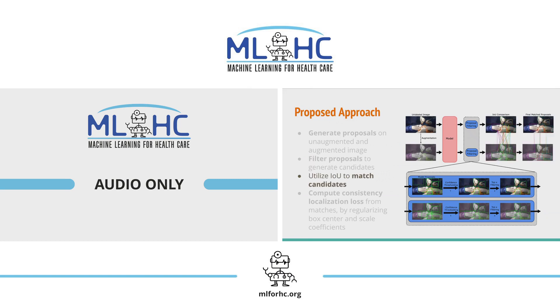Next, we use the intersection over union metric to match candidates between the two versions of the image. And lastly, we compute a consistency localization loss from the matches by regularizing the center and scale coefficients of the bounding-box predictions.